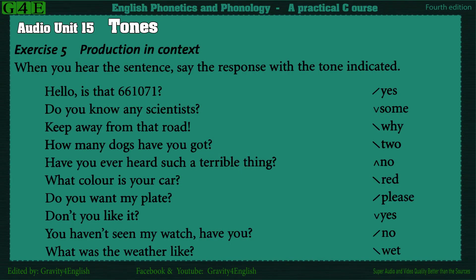Exercise 5: Production in context. When you hear the sentence, say the response with the tone indicated. Hello, is that double six one oh seven one? Yes. Do you know any scientists? Some. Keep away from that road. Why? How many dogs have you got? Two.